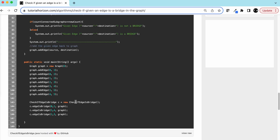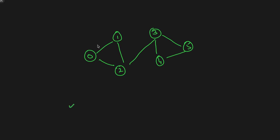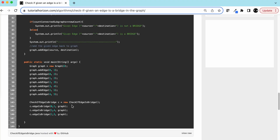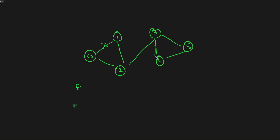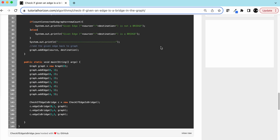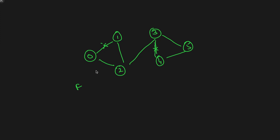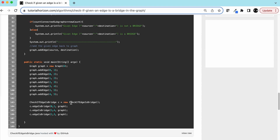If we remove edge 0-1, this is not a bridge — output should be false. Removing 3-4 will not disconnect the graph either — output false. Removing 2-3 will disconnect the graph — output true. So our expected output is false, false, true.